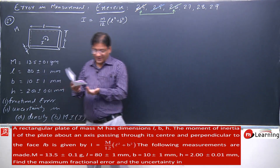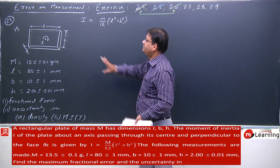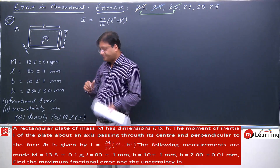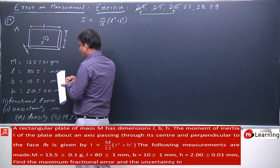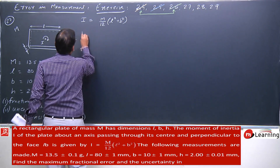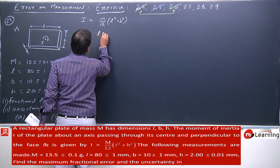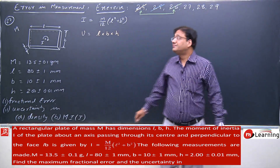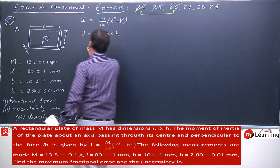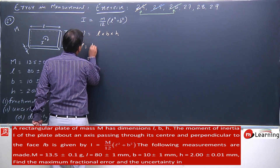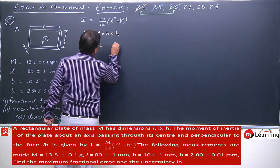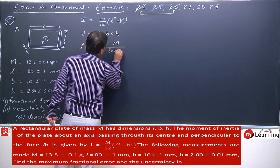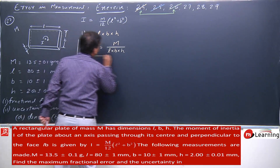The rectangular plate has mass M, length L, breadth B, height H — so it has a volume. Volume = L × B × H, and density ρ = mass / volume = M / (L·B·H). This is the density expression. The moment of inertia is given separately.